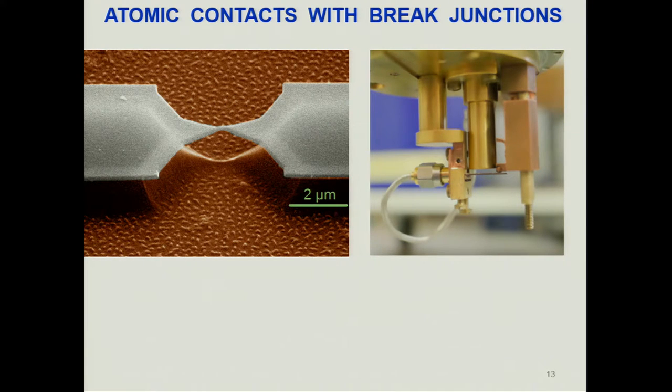To explore this physics, we use atomic contacts created with the break-junction technique. We start with a small aluminum bridge suspended over about two microns on a flexible plastic substrate, then bend the substrate to stretch and break the bridge. By fine-tuning the position of the pusher, we can control the contact between the two superconducting electrodes and create contacts of a few atoms or even a single atom.